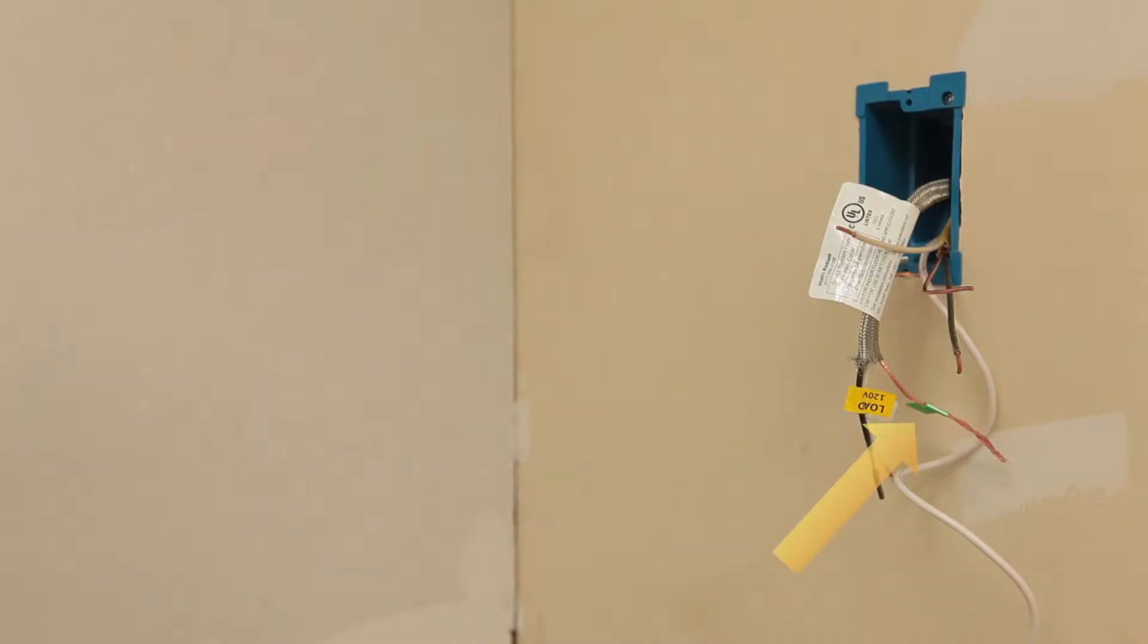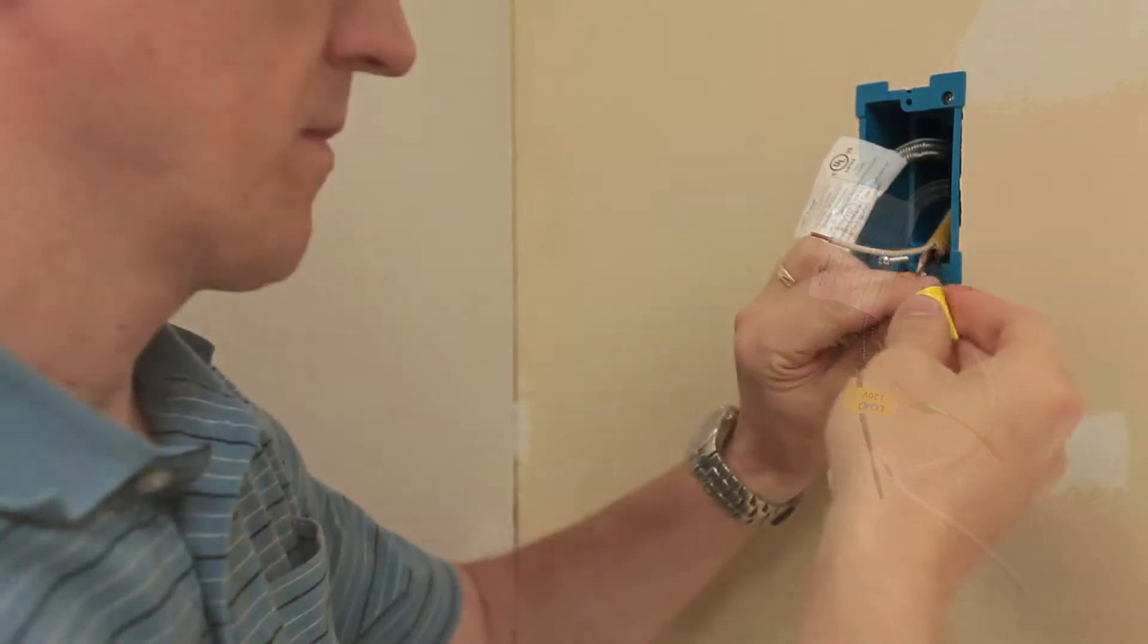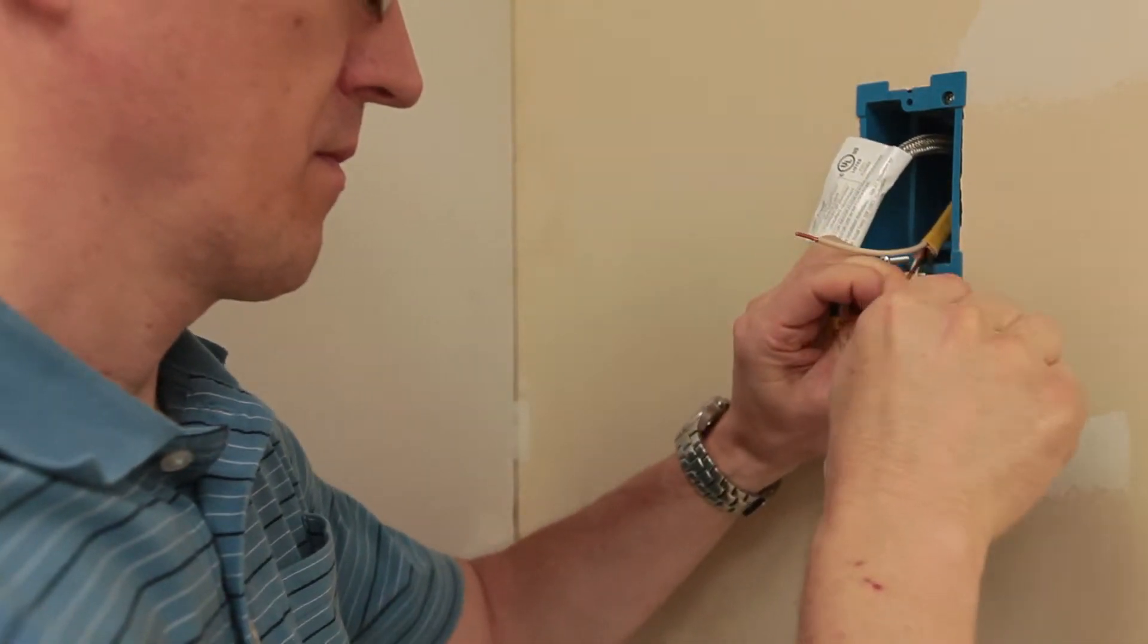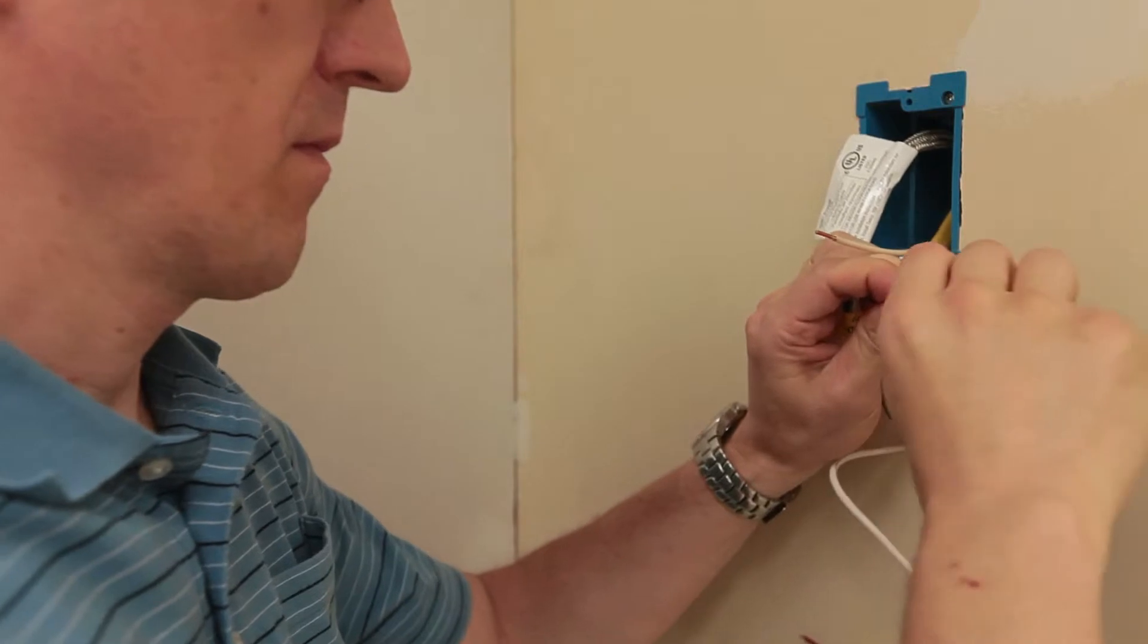Begin by connecting the ground wires from the warm wire leads to the house ground with a wire nut. If a steel box was used, this should also include a short wire to the electrical box grounding screw.